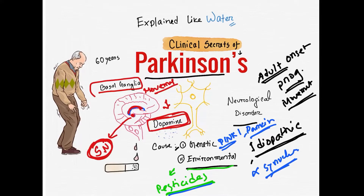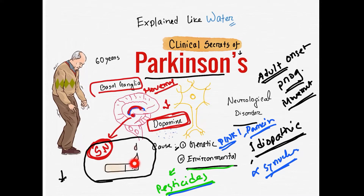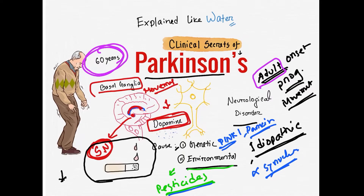One important thing is that Parkinson's disease is less common in smokers — smoking appears to have a protective effect. Non-smokers have a higher risk compared to smokers. It is an adult onset disease, so symptoms will be visible after 60 years of age. Normally the onset is between 60 to 70 years.